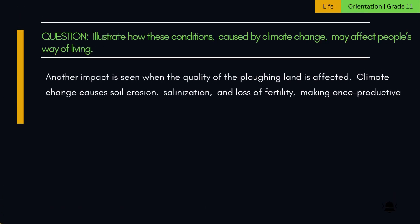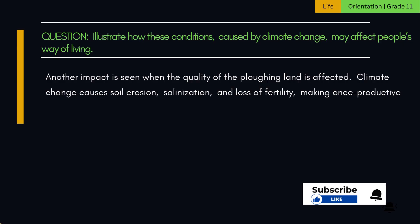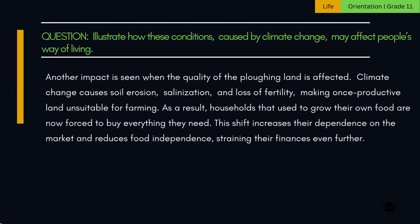Another impact is seen when the quality of the plowing land is affected. Climate change causes soil erosion, salinization, and loss of fertility, making once productive land unsuitable for farming. As a result, households that used to grow their own food are now forced to buy everything they need. This shift increases their dependence on the market and reduces food independence, straining their finances even further.